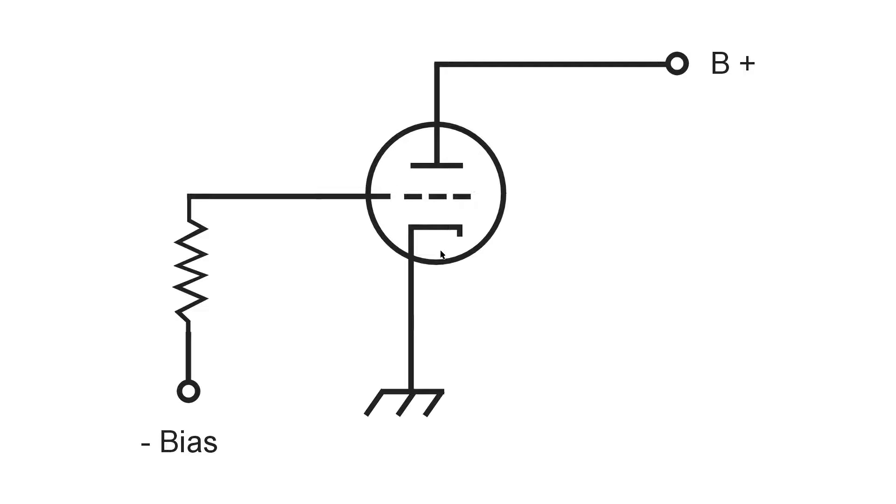The tube also has a filament, rarely shown in schematic diagrams. The grid is connected through a resistor to a source of negative voltage with respect to ground.